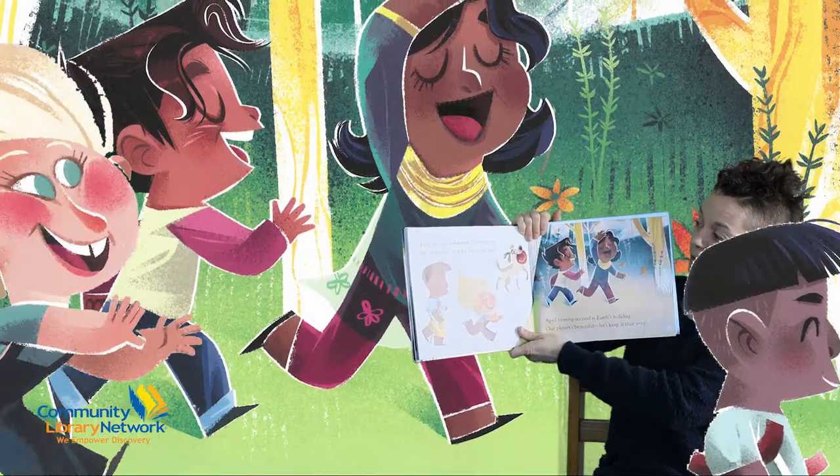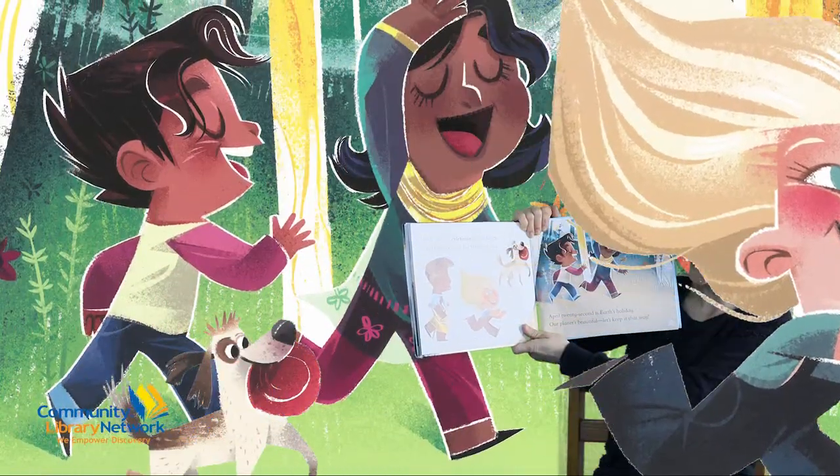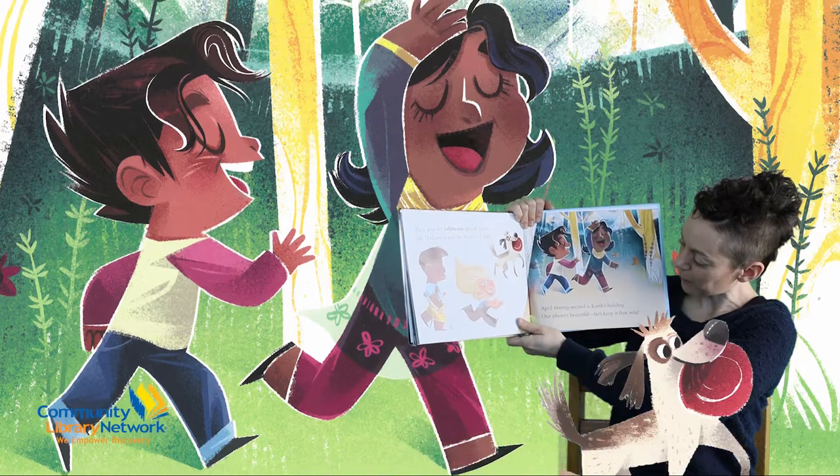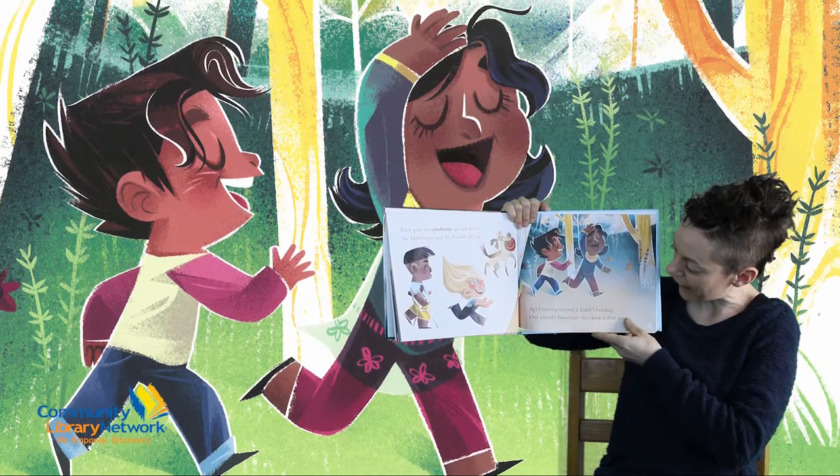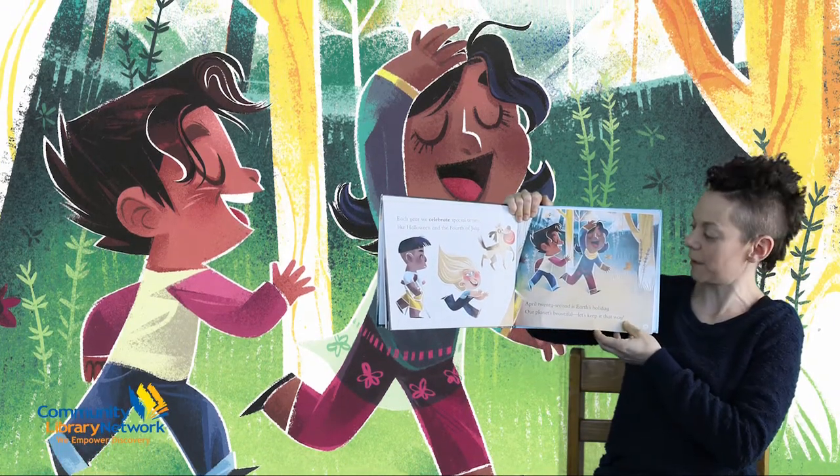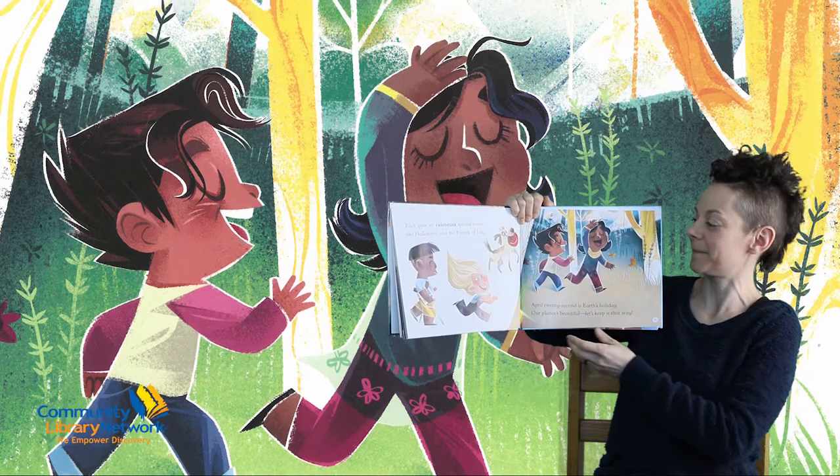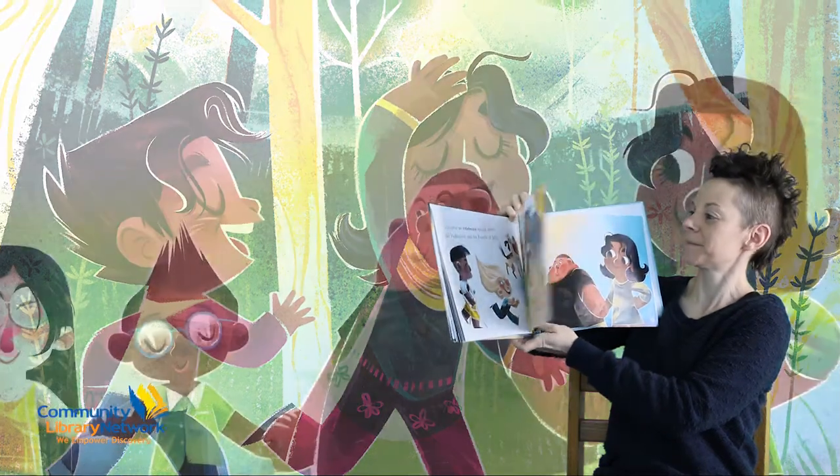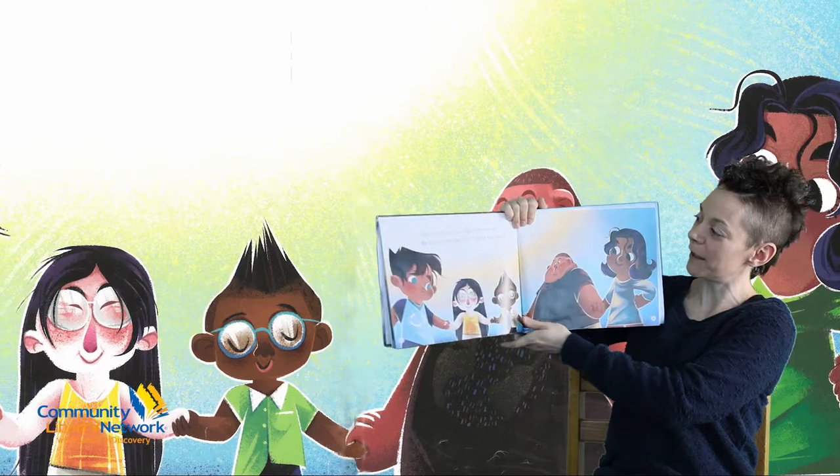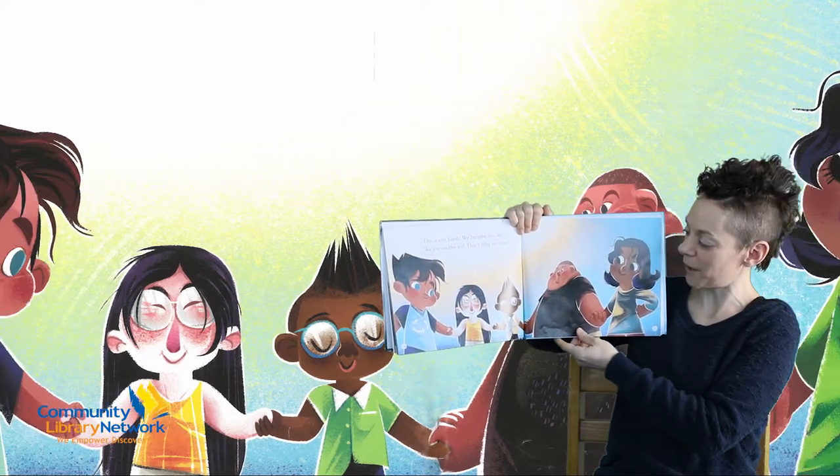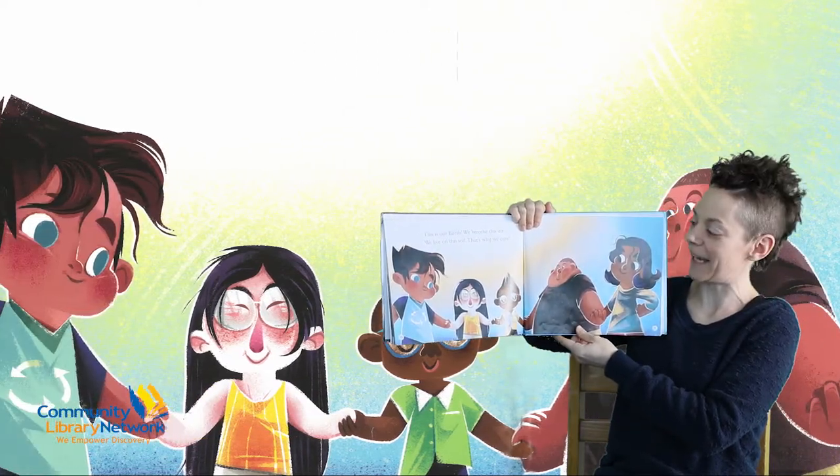Each year, we celebrate special times. Like Halloween and the 4th of July. April 22nd is Earth's holiday. Our planet's beautiful. Let's keep it that way. This is our Earth. We breathe this air. We live on this soil. That's why we care.